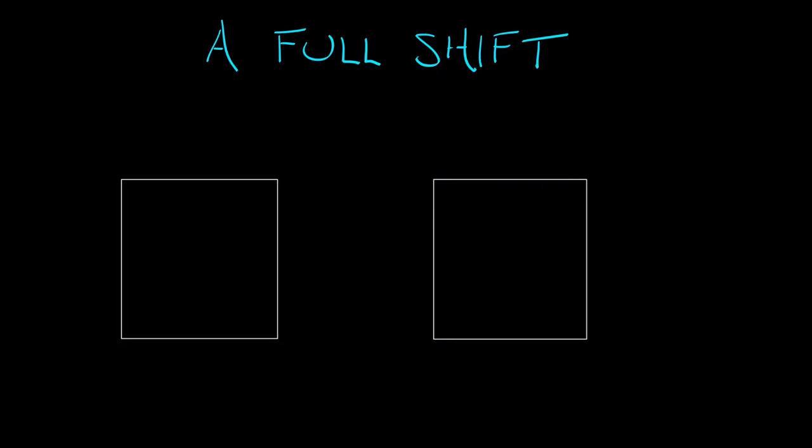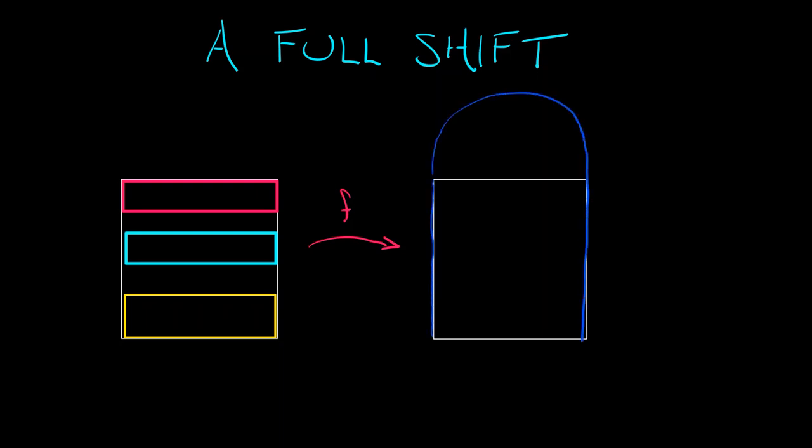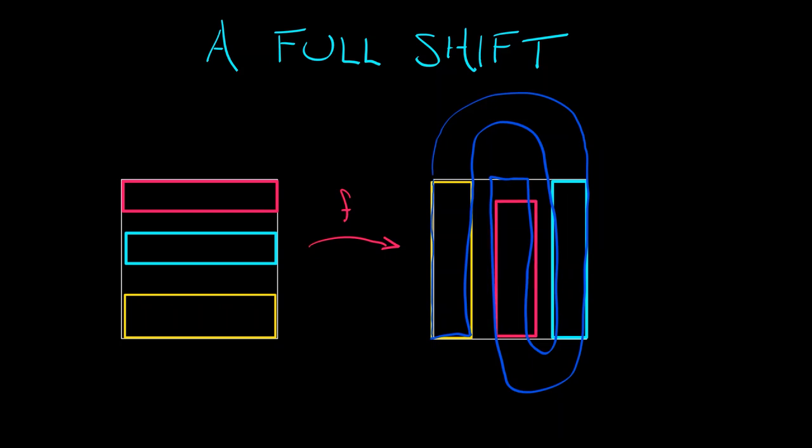Here's an example of something that is also going to be called a full shift, but something a little different. I'm going to take a square, just like with the horseshoe map, but instead of identifying two horizontal strips, I'm going to identify three horizontal strips. And instead of having the action of the map bend it around into a horseshoe, what I'm going to do is that same squeezing and stretching and bending, but now I'm going to keep going when I bend it. And I'm going to bend it around into this curly shape like I'm folding dough for a croissant or something like that.